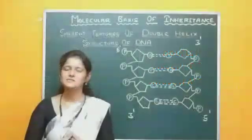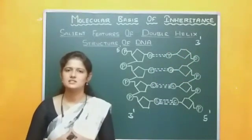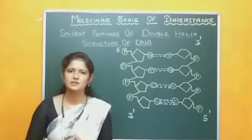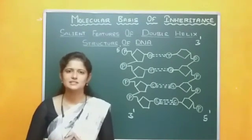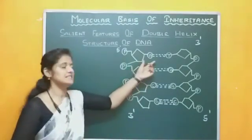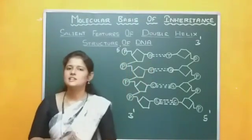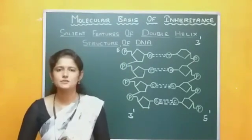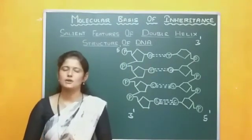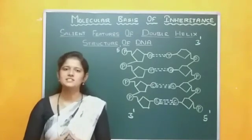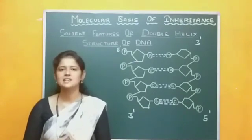Hello students. In the previous video we talked about the structure of DNA. The DNA is made up of a polymer of nucleotides. The nucleotide consists of three components: pentose sugar, nitrogenous bases, and phosphoric acid. Today, let us talk about the salient features of the double helix structure of DNA. The structure of DNA was given by Watson and Crick, and the model they called the DNA double helix.